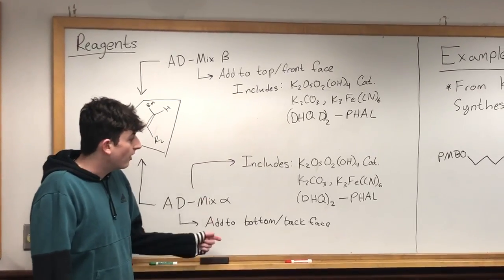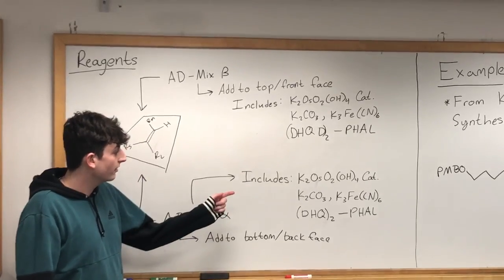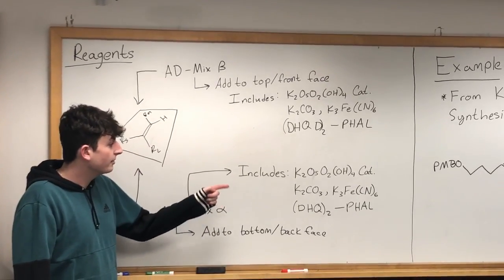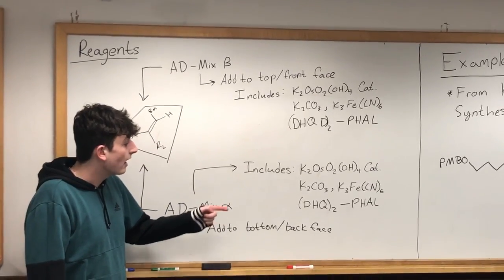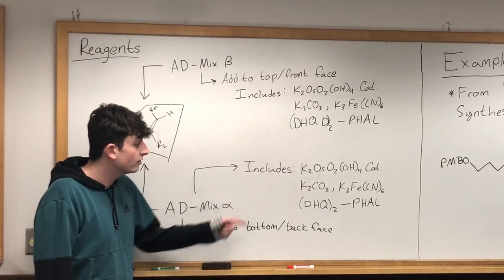In AD mix alpha we have: osmium tetroxide, potassium carbonate, potassium ferrocyanide, and the chiral quinine ligand DHQD-2-PHAL.